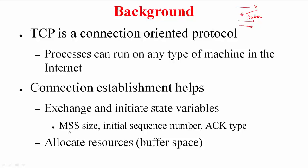For example, they can negotiate what is the maximum segment size that they want to use. They can also exchange their initial sequence numbers. You can also figure out what is the acknowledgement type that you want to employ, either selective ACK or cumulative acknowledgement. Apart from this, you can also allocate resources, for example, the buffer space.